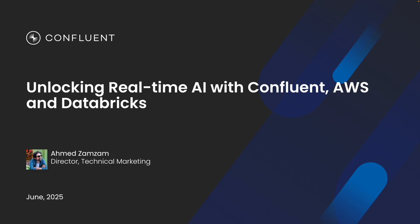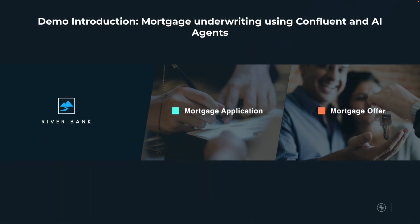The best way to do this is to walk you through a demo. This is a demo for a fictitious company — a mortgage provider that wants to use AI to process mortgage applications in real time. This is a global mortgage provider, and they'll ingest mortgage applications into Confluent and use AI agents to process them in real time.